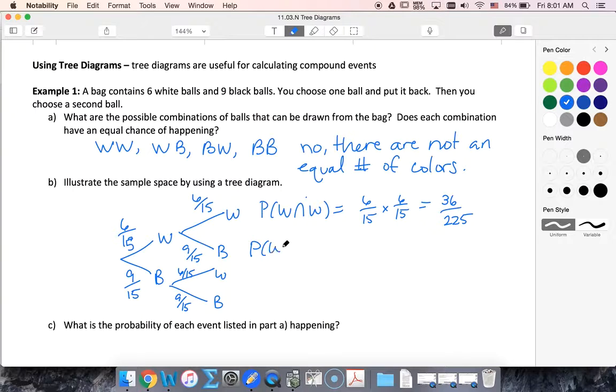The probability of getting white then black, six out of fifteen times nine out of fifteen, that's fifty-four out of two twenty-five.